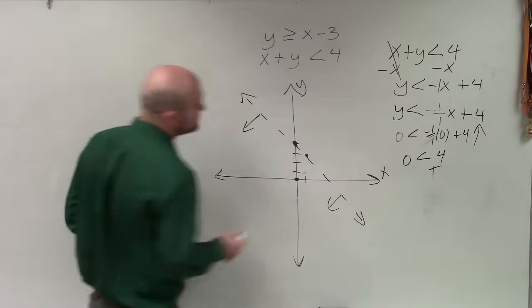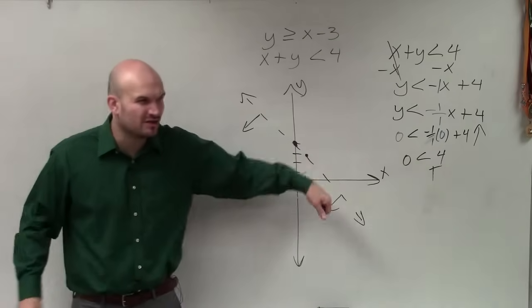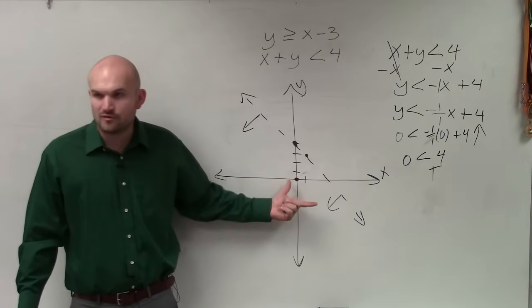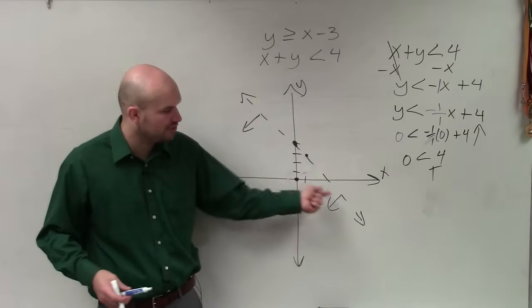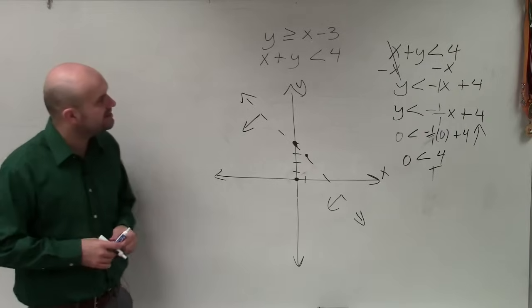However, when I have a system of two inequalities, rather than graphing all the lines, I just like to use arrows for this, just so I'm not always creating too much work. I know I'm going to shade down below the line in this case.